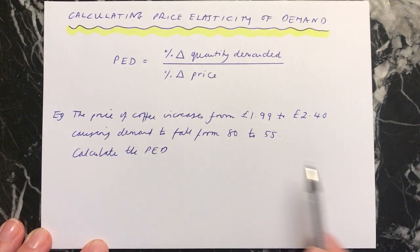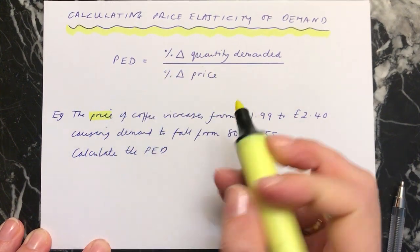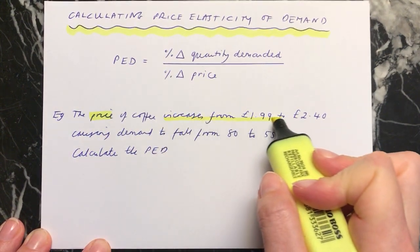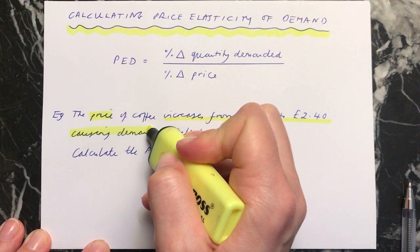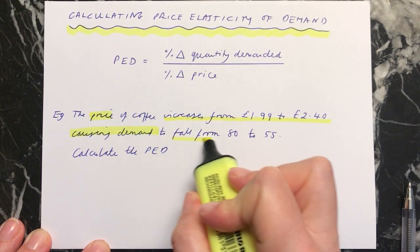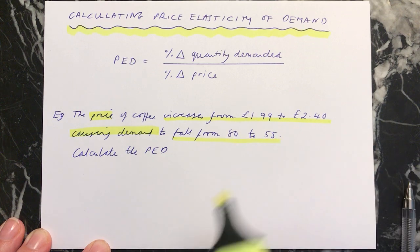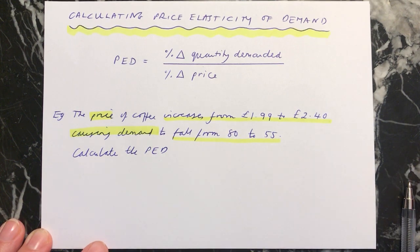So for example, the price of coffee increases — our price increases from £1.99 to £2.40. And this causes demand to fall from 80 to 55 units. We need to calculate the price elasticity of demand.